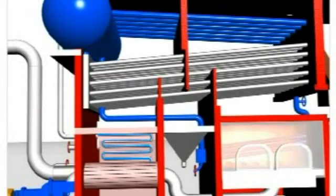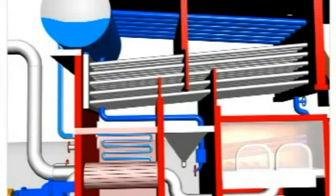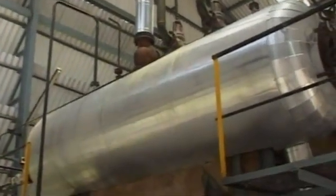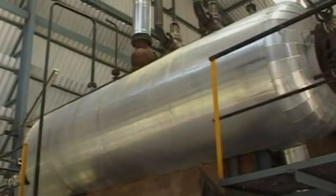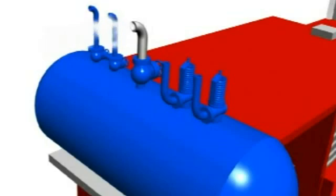From the boiler drum, water moves to the convective bank tubes and radiative furnace in-bed cooling tubes due to thermal gradient. Steam is formed by counter-current convective and radiative heat transfer. The mixture of hot water and steam reaches the drum through riser pipes, and finally steam is taken out of the drum through the main steam valve after passing through the steam purifier.